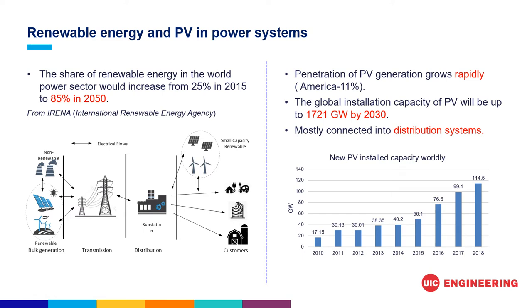Renewable energy generation has increased significantly these years because of the vast energy demand and climate impacts. The International Renewable Energy Agency has reported that the share of renewable energy in the world power sector would increase from 25% in 2015 to 85% in 2050. We can see from the diagram that the penetration of PV generation grows rapidly, and the global installation capacity of PV will reach 17,021 GW by 2030.